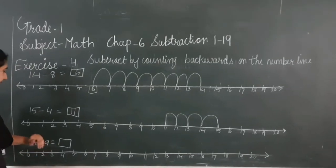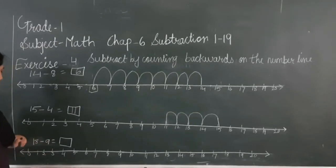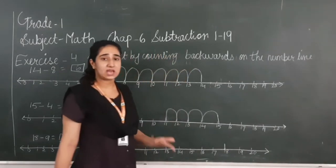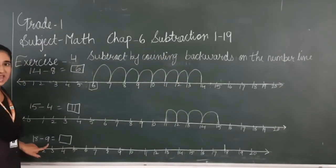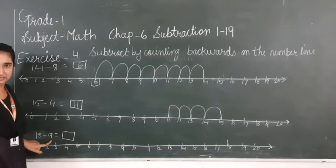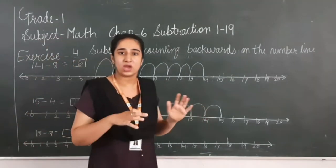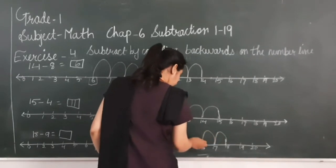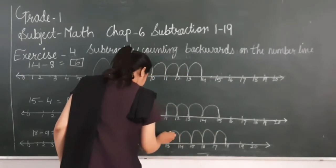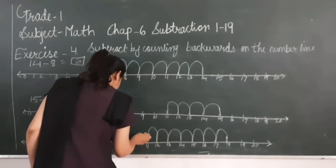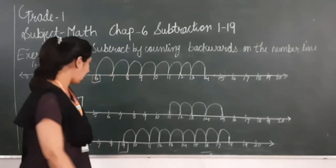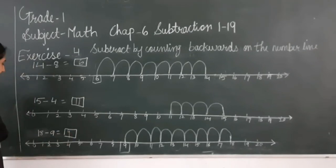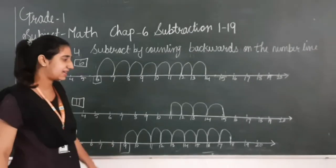C, 18 minus 9. We have to subtract 9 from 18. I will start walking from 18. How many steps will we walk? I will walk 9 steps. Whatever we have to subtract, that many steps we have to walk. So here I have to walk 9 steps backward: 1, 2, 3, 4, 5, 6, 7, 8 and 9. Where do I stop? At number 9. So 9 is the answer. When I subtract 9 from 18, I get 9 as the answer.